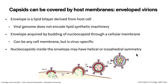Capsids — either helical or icosahedral — can be covered by membranes; we call these enveloped virus particles. The envelope is derived from the host cell because viral genomes do not encode lipid synthetic machinery. These envelopes are acquired by budding through a cellular membrane — at the plasma membrane, the nuclear membrane, or the ER membrane — always virus-specific.